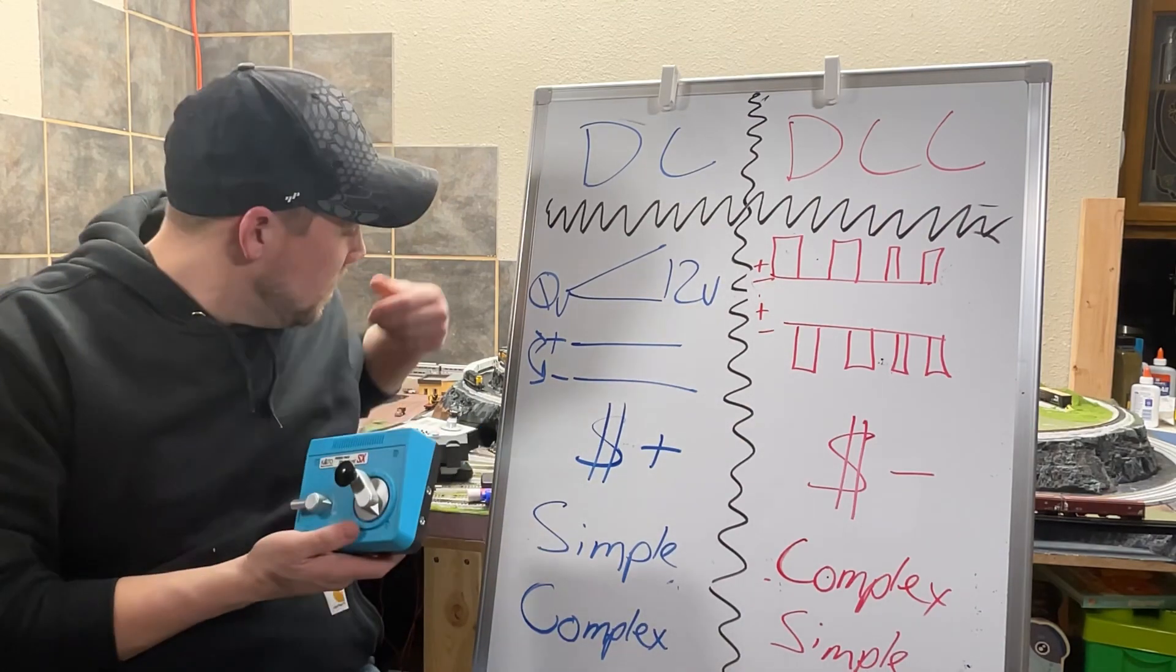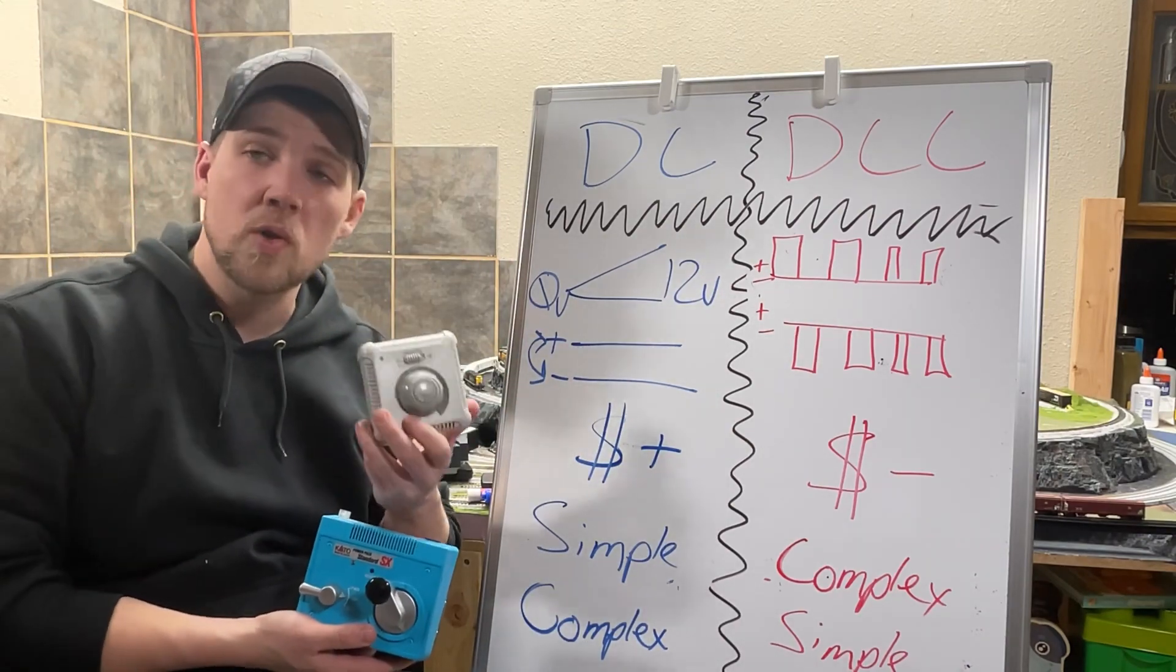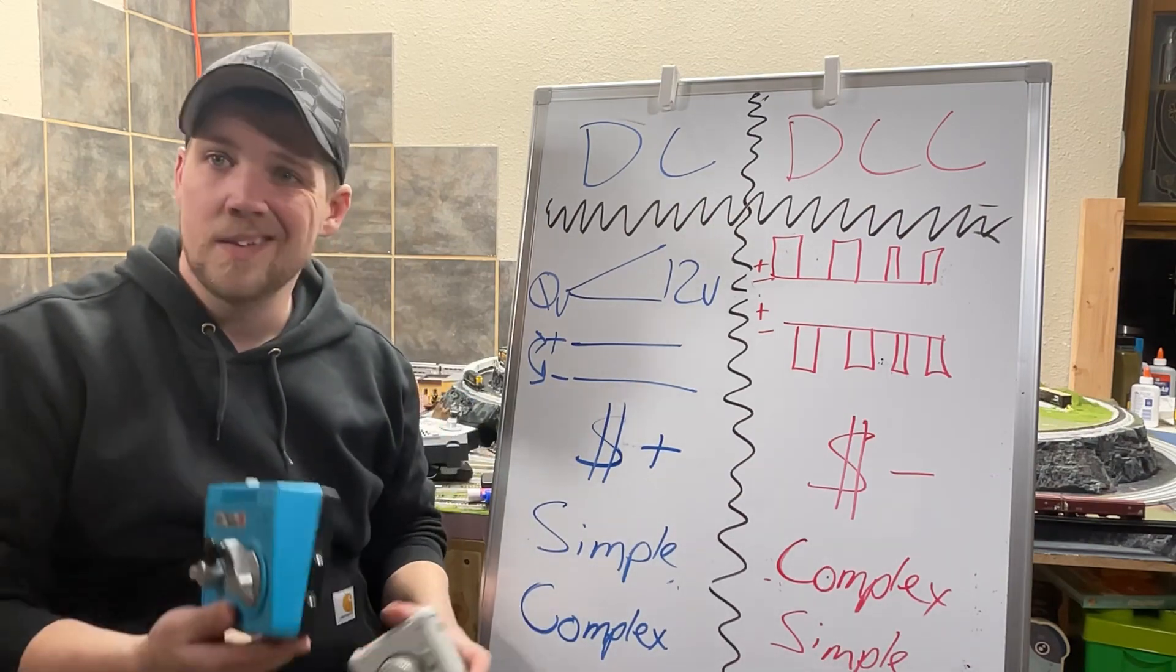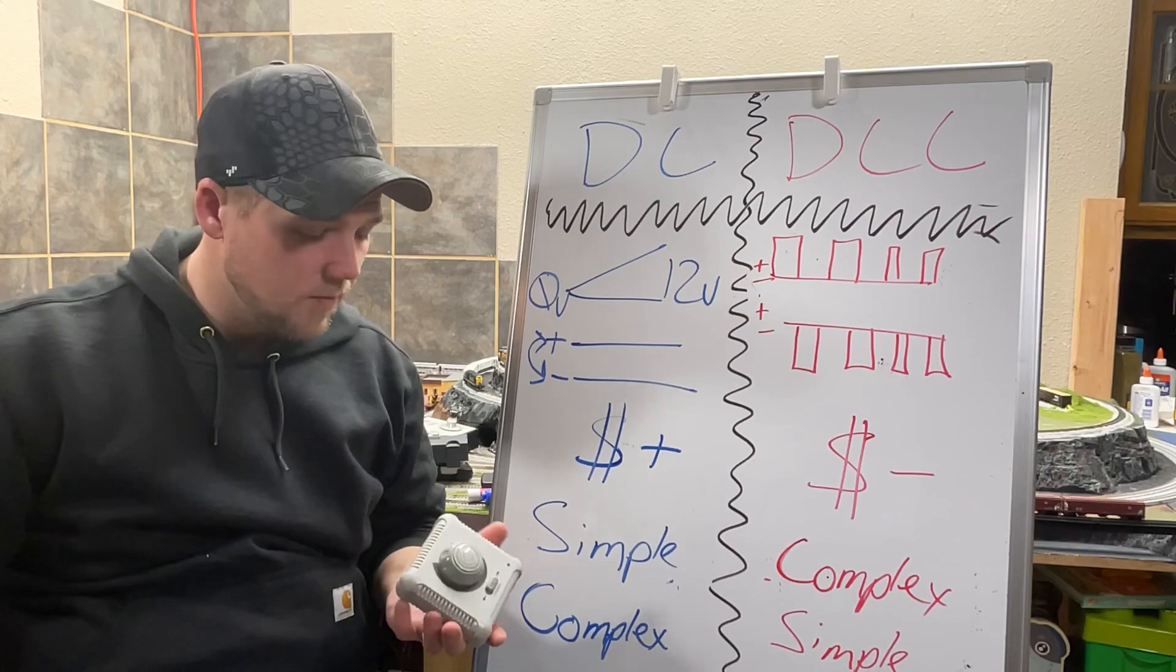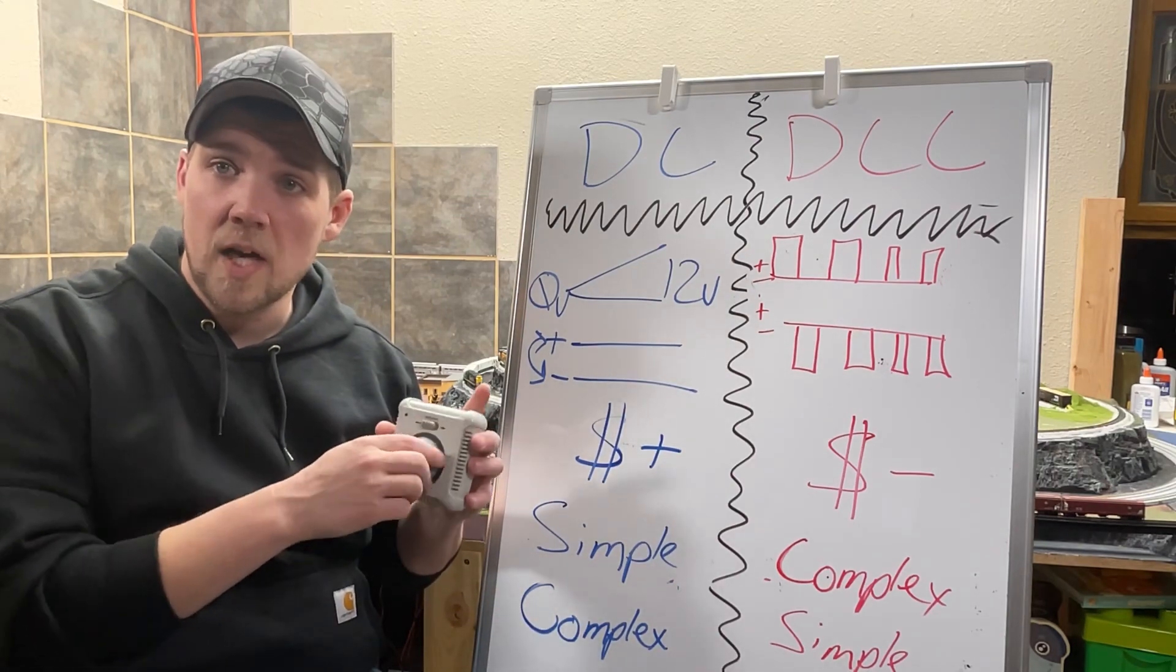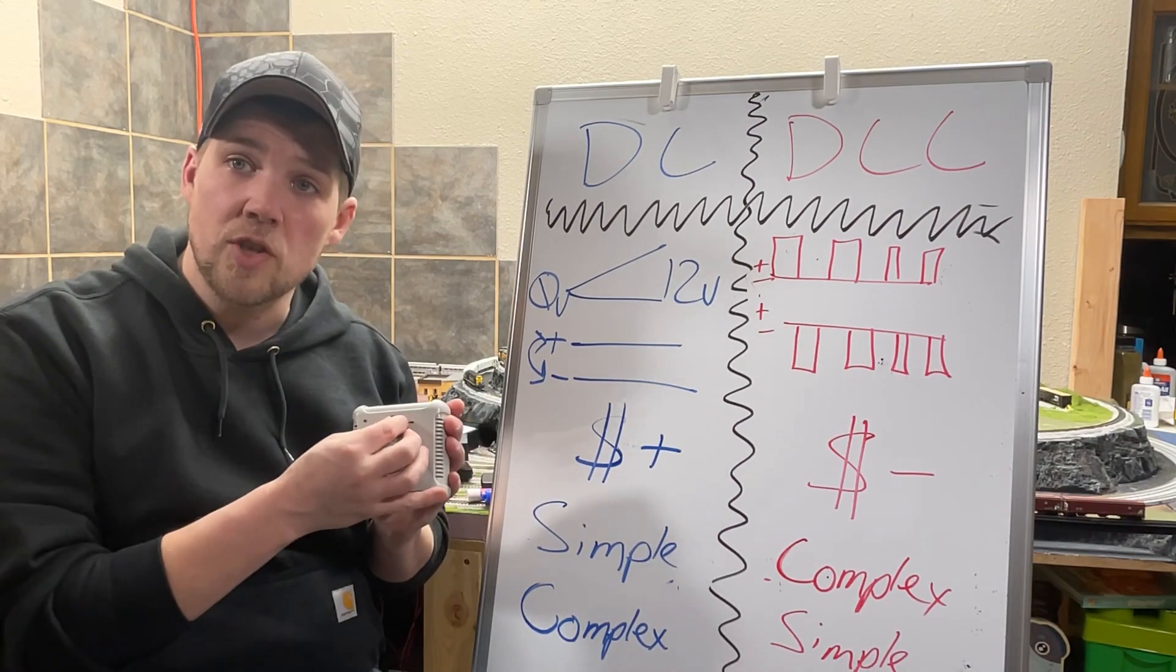There are lots of different versions of these. You're going to see a whole bunch of them. This is a Bachmann one that comes with most of their starter sets. This is the Kato one that comes with all their starter sets. You see them in different colors, various configurations. But for the most part, they all work the same. There's a rotary knob that varies the voltage to your rail, and there's a switch that changes the direction.